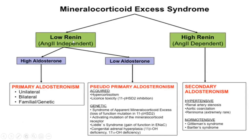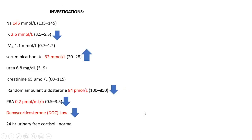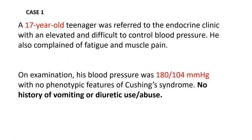Going back to the chart: this is low renin, low aldosterone with hypertension. Hypercortisolism is ruled out — no features of Cushing's. The 11-beta HSD2 problem is ruled out — no history of licorice use, and urinary free cortisol is normal. Congenital adrenal hyperplasia is ruled out — in CAH we'd expect a high DOC, but this patient's DOC was low. We are left with the diagnosis of Liddle syndrome.